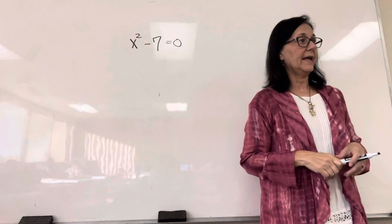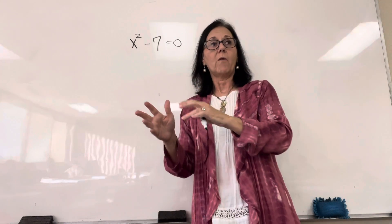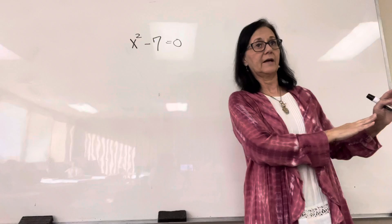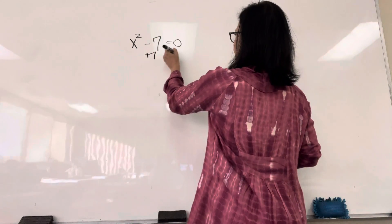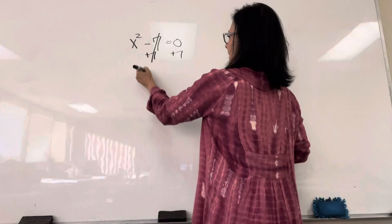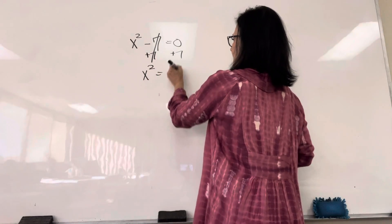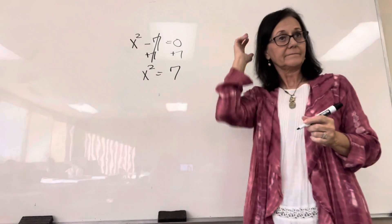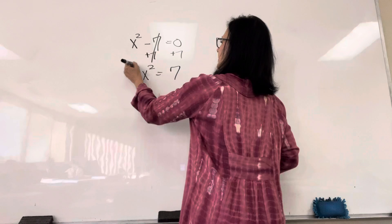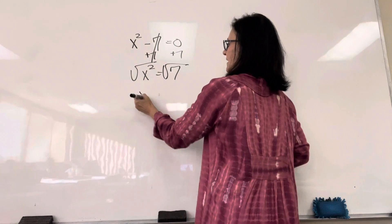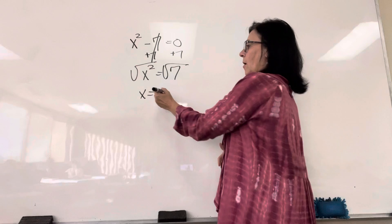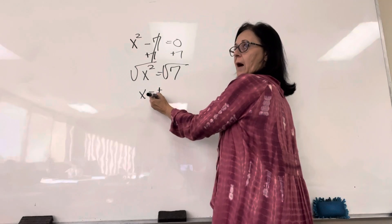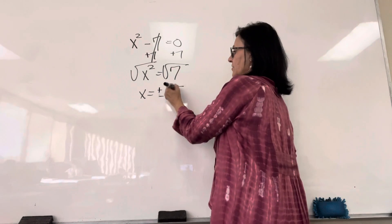So, I'm going to add the 7 to both sides. We have x squared is positive 7. And then we take the square root of both sides. x equals plus and minus the square root of 7.